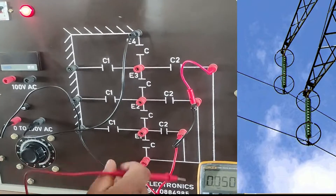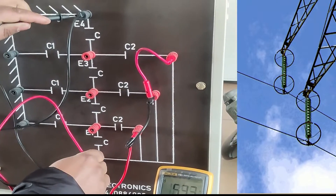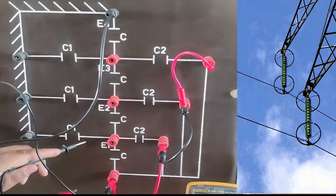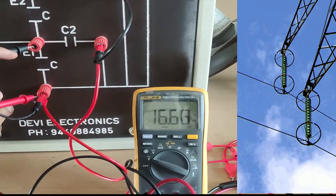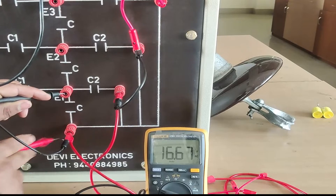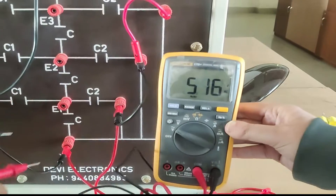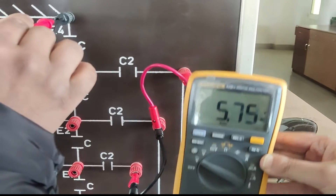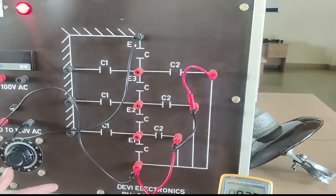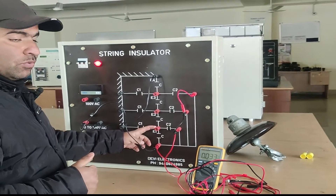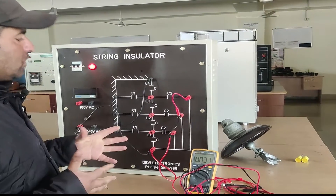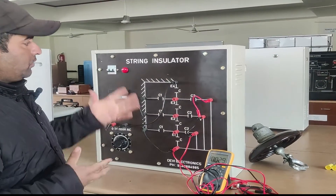We have connected the guard wire creating an additional capacitance to compensate leakage current. We energize the string again at the same 60 volts and check. The voltage across the bottom disc has now reduced from 22 volts to 16.69 volts — much closer to the ideal 15 volts. The second disc shows 13 volts, and as we approach the top, it continues to reduce. The voltage is now more uniformly distributed, and the string efficiency has improved from around 60% to approximately 90–95%.